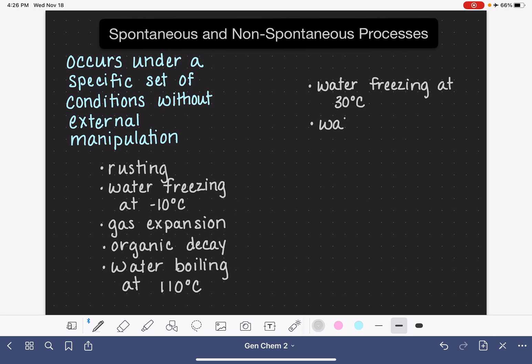Likewise, water boiling at a temperature that is too low. The boiling point of water is 100 degrees Celsius. So maybe if we were at 70 degrees Celsius, there would be a situation where water is not going to spontaneously boil. If we want the water to boil,